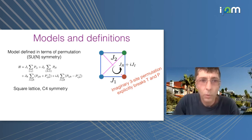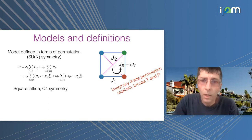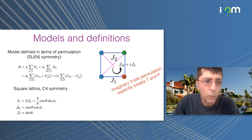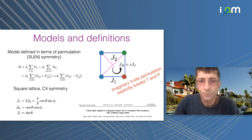The model has a nice C4 symmetry on the square lattice. The Hamiltonian is defined in terms of permutation operators: at each site you have colors and you simply make permutations. J₁ is on nearest neighbors, J₂ is the frustrating diagonal term, and then there is a three-body permutation term with an imaginary part that explicitly breaks time reversal and parity. The phase is quite robust, so I will show results for specific parameter choices.